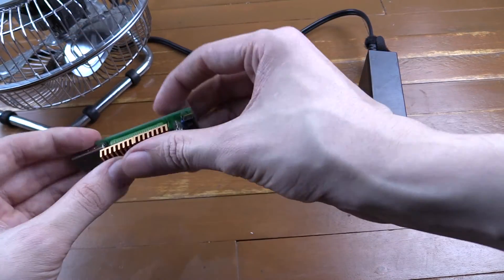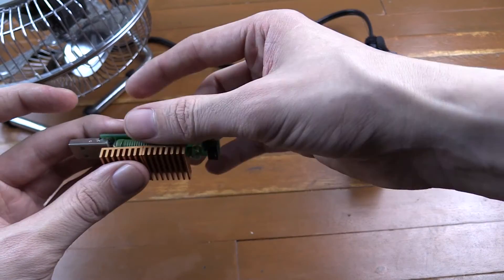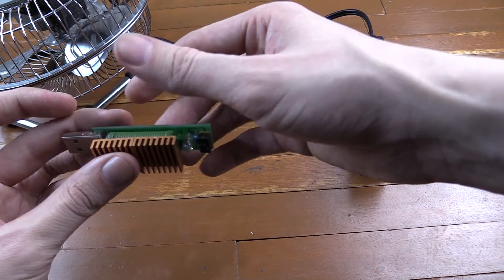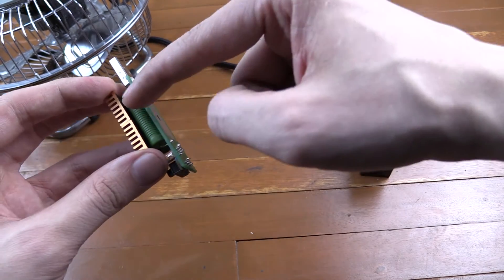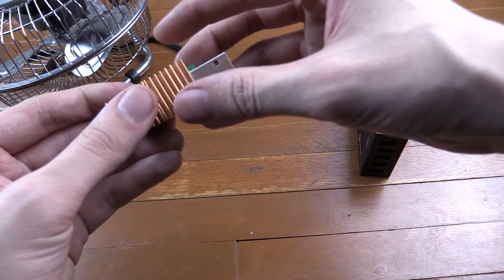Now the interesting thing is I can feel these heat sinks and they're barely even warm but when I feel this resistor on the side it's extremely hot. So I don't think much of the heat is actually being transferred through at all. So that's a bit of a disaster.